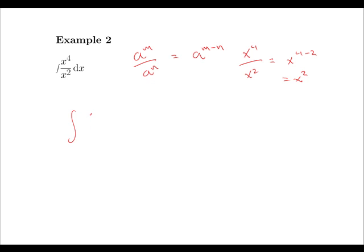So now the integral of x to the 4 over x squared dx is simply the integral of x squared dx, which we just found out was x cubed over 3 plus c.